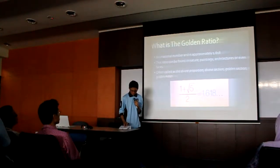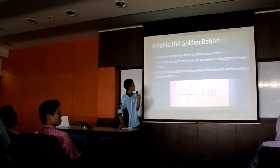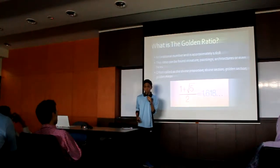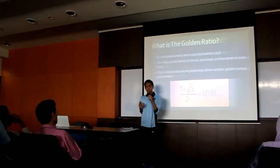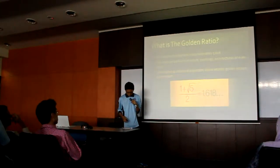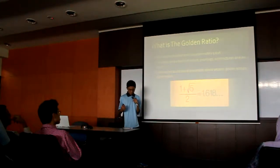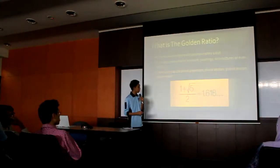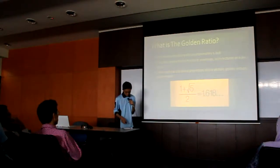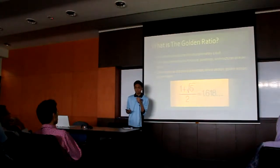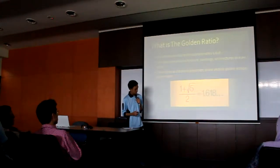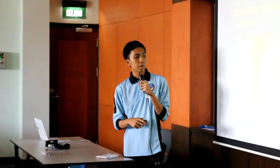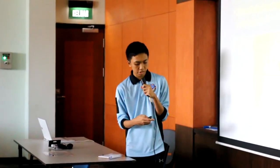Alright, what is the golden ratio? The golden ratio is a special number, an irrational number similar to pi. The digits of the golden ratio go on forever without repeating. To be exact, the value of the golden ratio is 1 plus the square root of 5 divided by 2, which gives us 1.618.